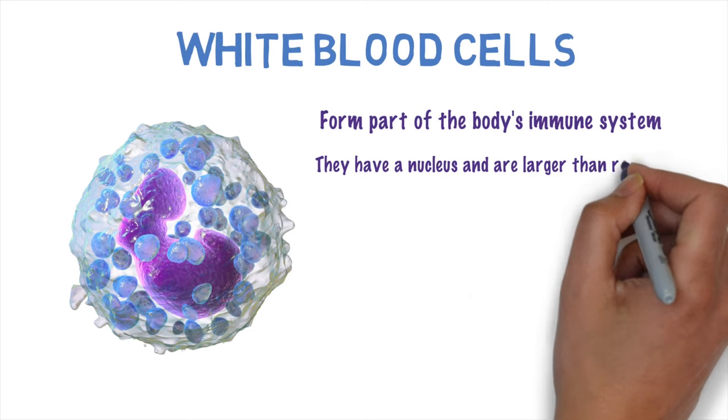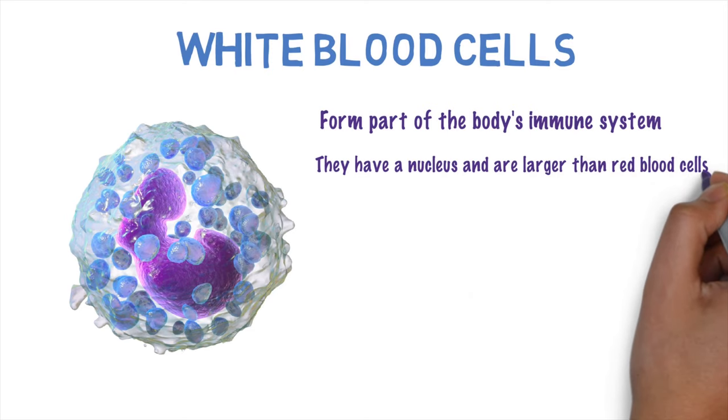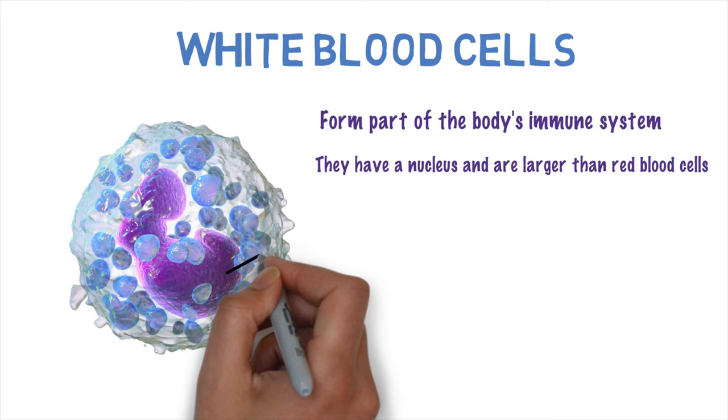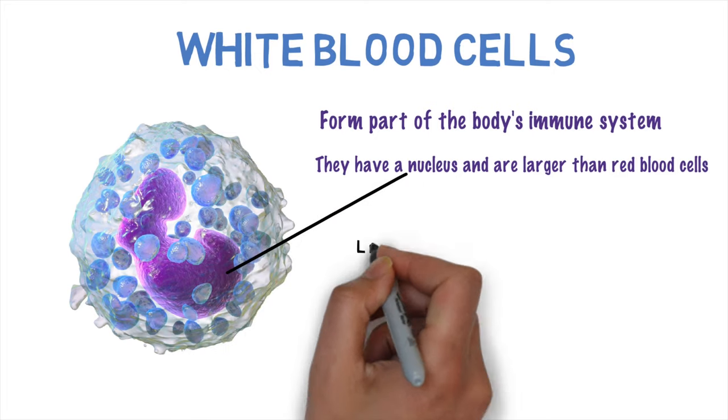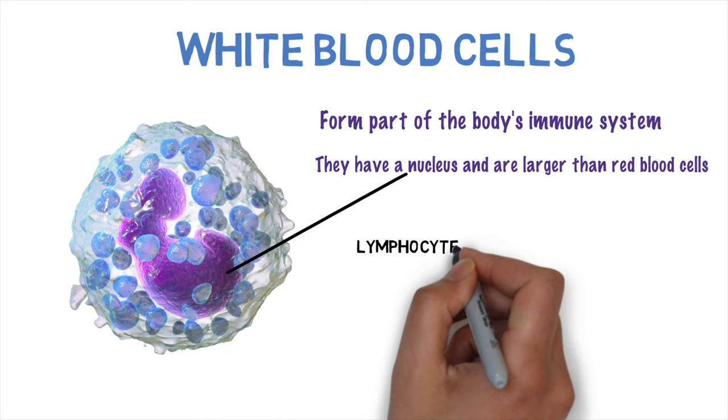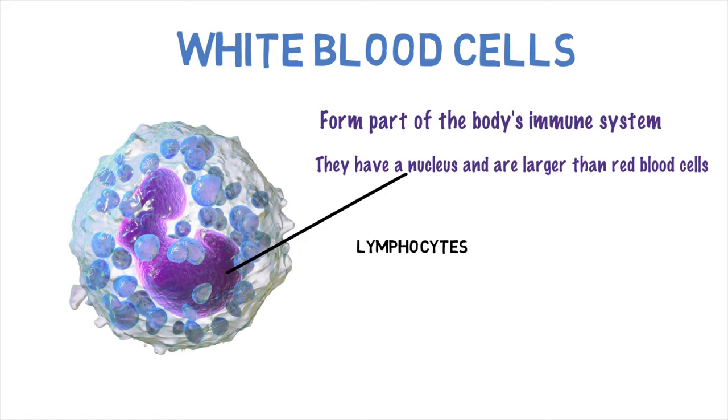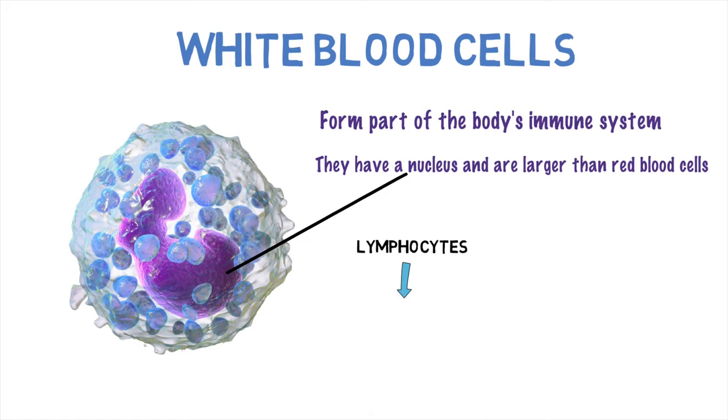There are two main types of white blood cell that we need to know about. There are ones called lymphocytes, and their main job is that they produce antibodies, which are a type of protein, which are used for destroying microorganisms.